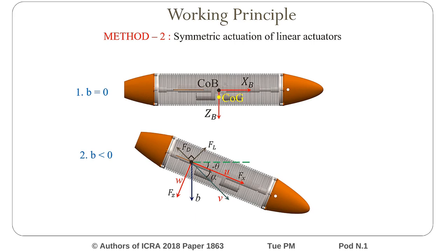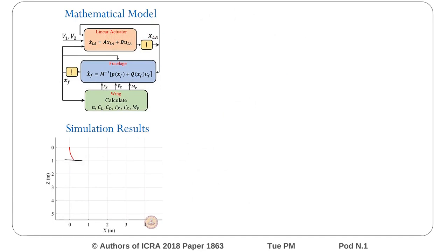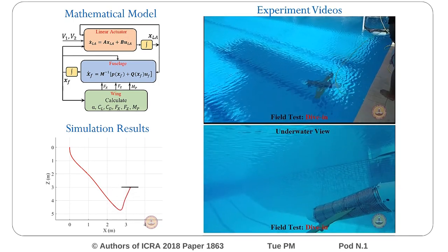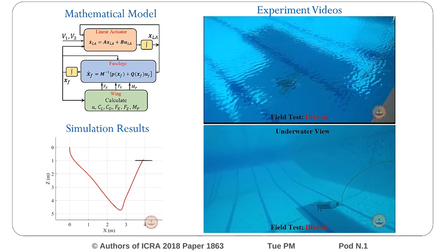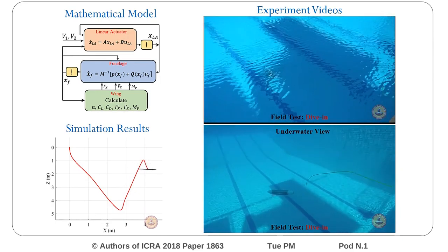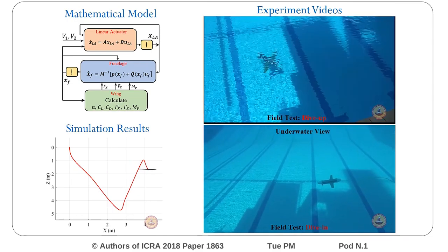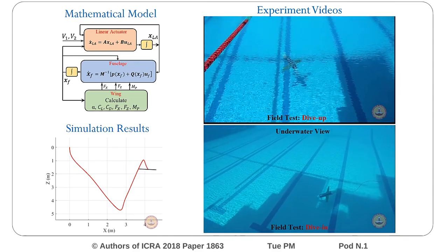This is the method utilized in the Roboy prototype presented in this paper. Before developing the prototype, the system has been mathematically modeled as three subsystems: the linear actuator subsystem, fuselage subsystem, and the wing subsystem. The overall performance has been analyzed by simulations, and one of the simulation results of the dive sequence is presented here. Based on the simulation analysis, few modifications were made to the design and a prototype has been developed. The experimental video showing the performance of the system can be seen.